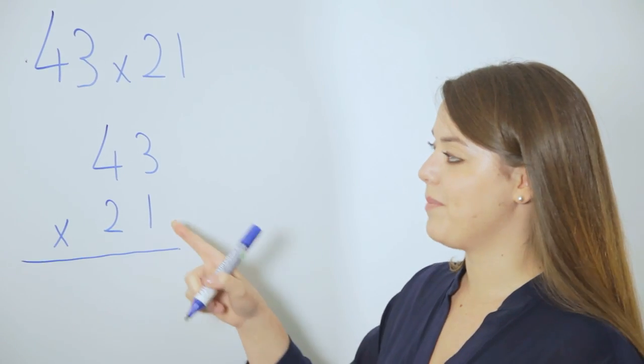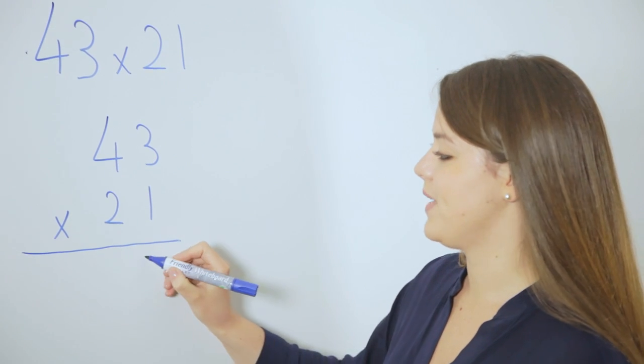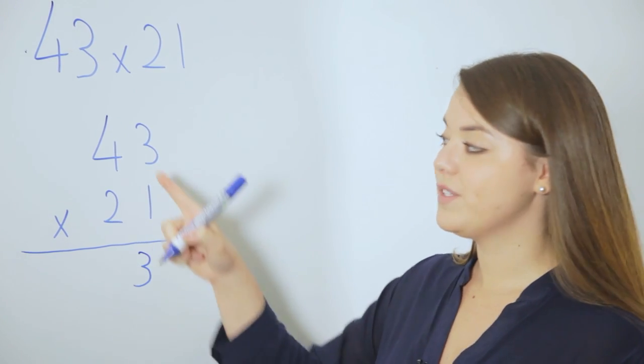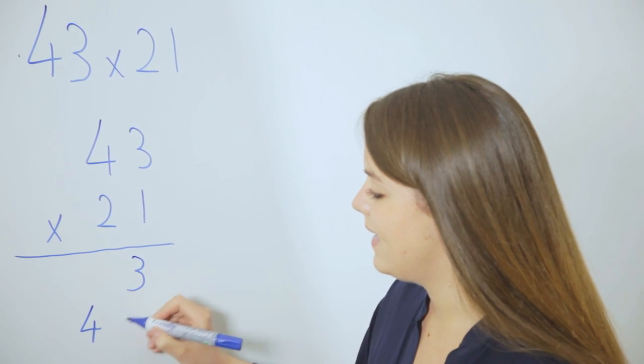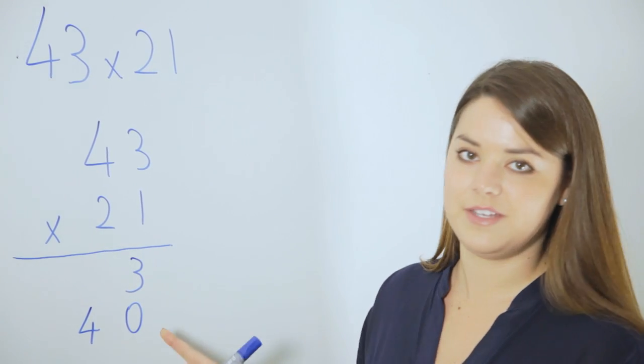We're going to start by multiplying by the 1. 1 times 3 is 3. 1 times 40 is 40 and we place the 40 beneath, staying in line with the tens and units.